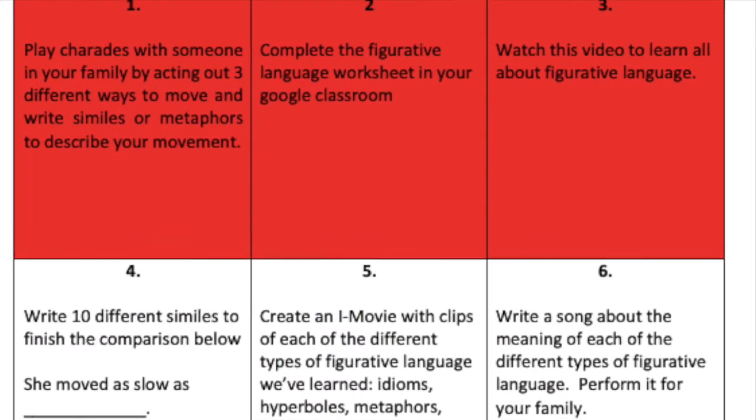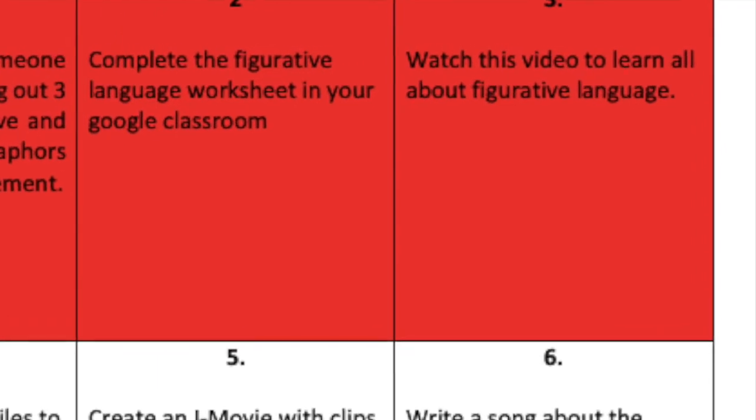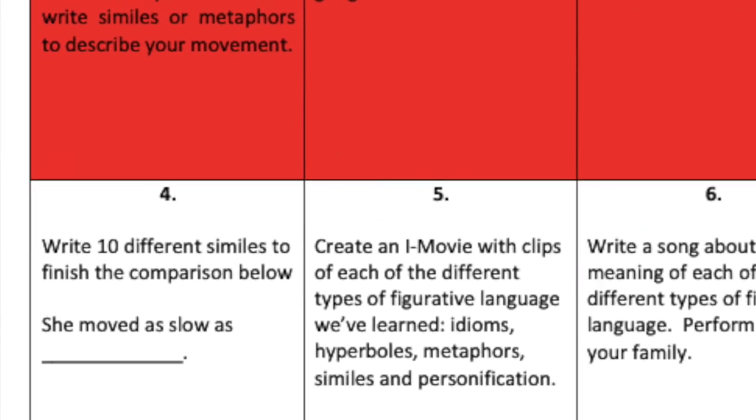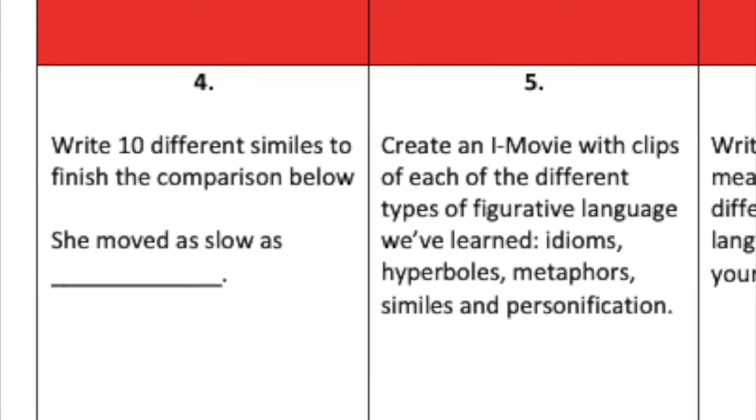Our third pitfall is that there is no clear product, or students don't know how to turn things in. If we look at number three — 'watch this video' — how do we know they did it? You might just be thinking, 'I just want them to watch the video,' but how do you know the child actually did that? Even a task like writing 10 different similes: I've seen my own child try to fit all 10 into a tiny box on the choice board. We need to be more explicit with directions so students know exactly where to write their answers, how to turn things in, and what the expectations are.